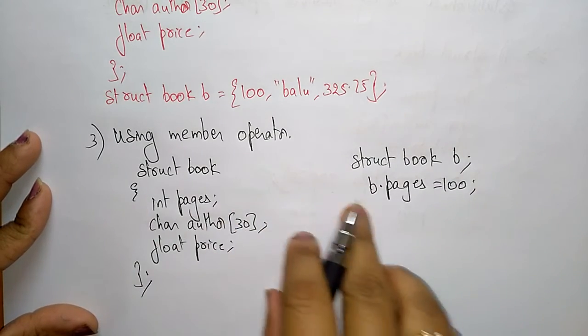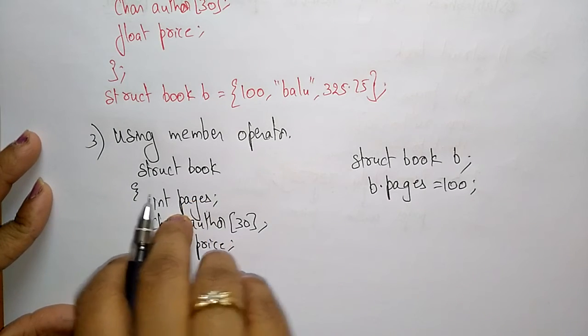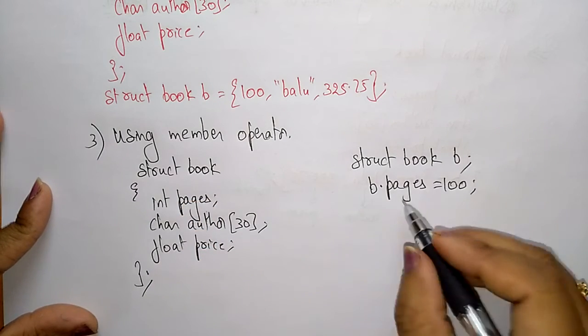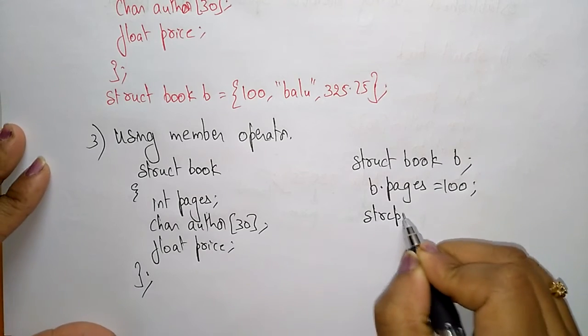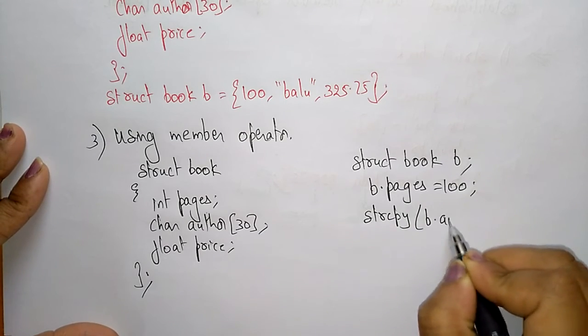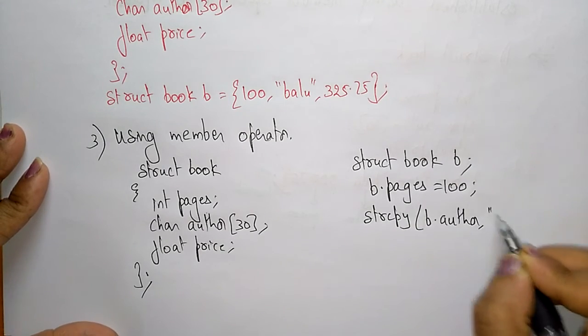B.pages = 100. By using the member operator I am initializing the values to these variables. B.pages, strcpy(B.author, "Balu").